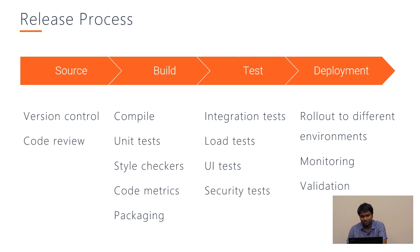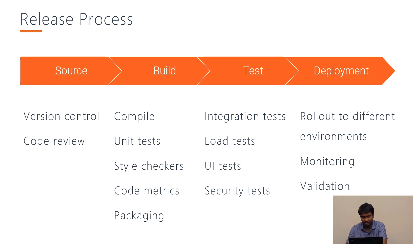In the source stage, developers code and use version control. They do code reviews and peer reviews before committing. Once the reviews are done, the developer commits into a branch — that might be a feature branch or even the dev branch. When the commit is pushed to the central repository, a build can be started. The build will compile, run unit tests, style checkers, code metrics, and once everything passes, the code can be packaged and used in the next stage, which is test.